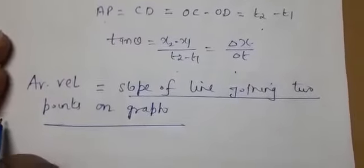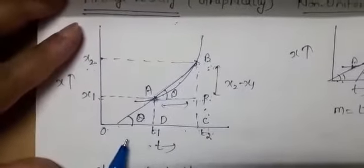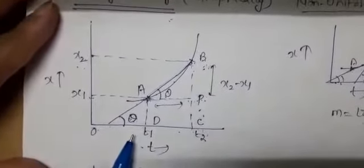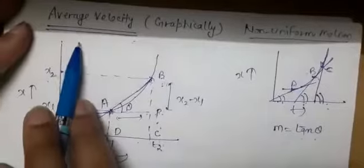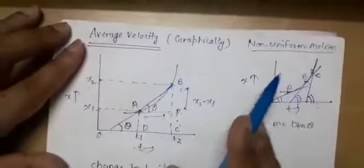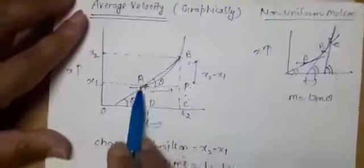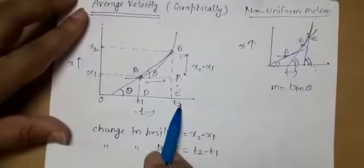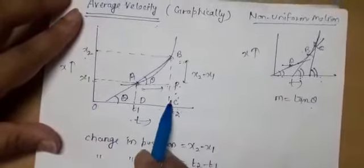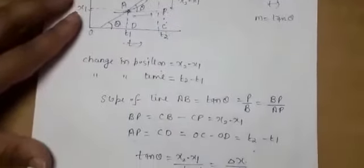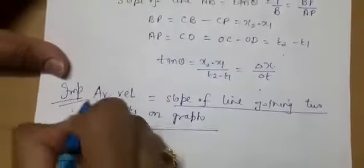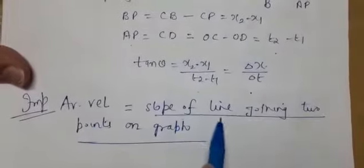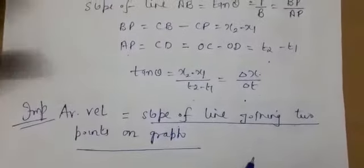Although the concept is quite straightforward — if you are asked to explain average velocity graphically for non-uniform motion, first draw the graph, take two points, note their corresponding positions and times, then find the slope. From the slope you get tan θ, which equals average velocity. Conclusion: average velocity equals the slope of the line joining two points on the position-time graph.